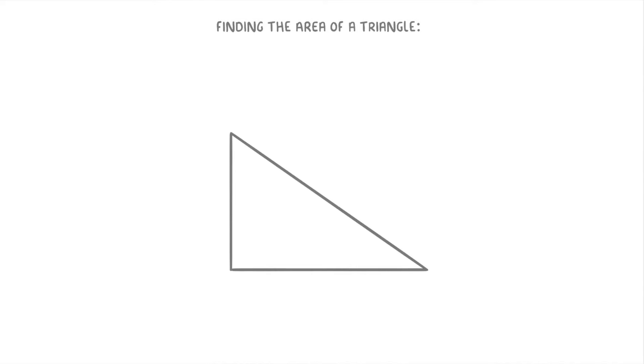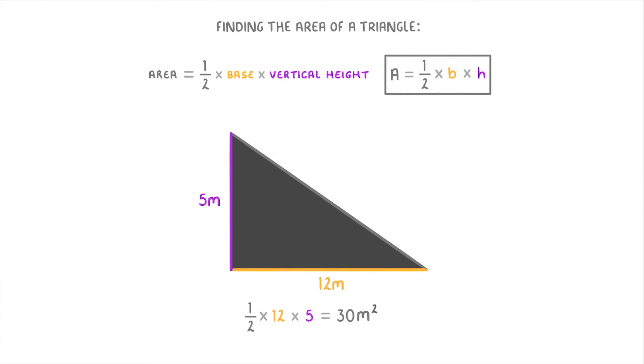For the triangle the formula is area equals one-half times its base times its vertical height. So if this triangle here was 12 meters long on the bottom and 5 meters tall we'd do one-half times the base of 12 times the height of 5 which would give us an area of 30 square meters.